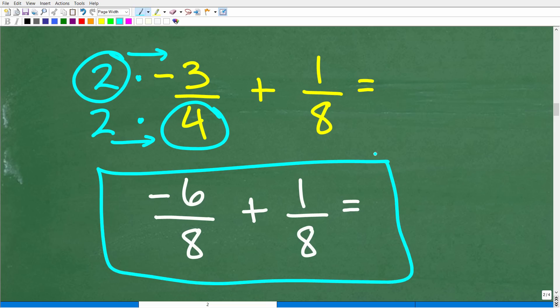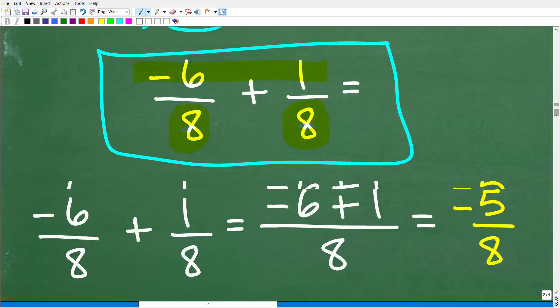Alright, so now we have fractions here with the same denominator. So how do we add fractions with the same denominators? Easy. All we have to do is add the respective numerators.